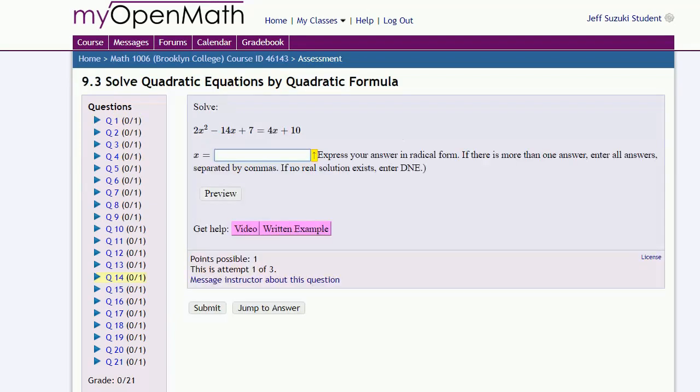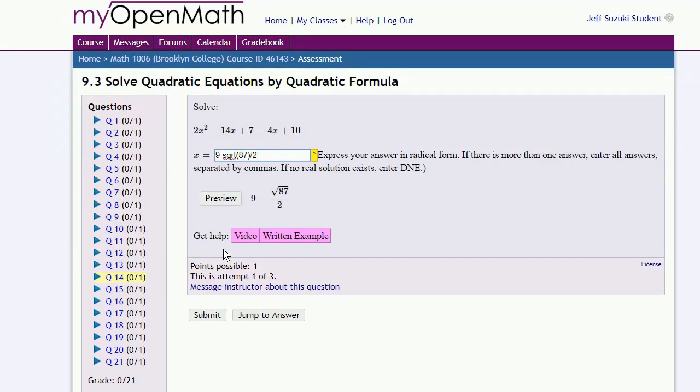Or we can solve quadratic equations, so we type in our answer. Again, MyOpenMath will show us what we've actually entered. And if it's not what we wanted to enter, we'll need to fix it.